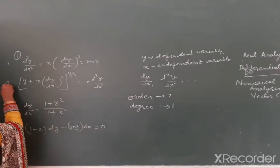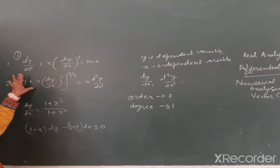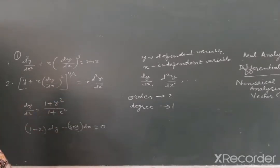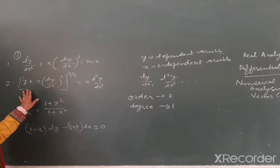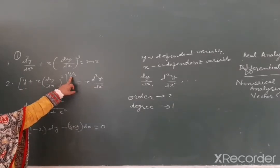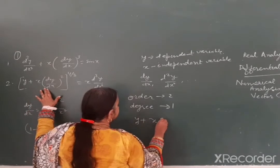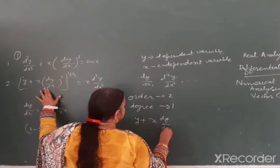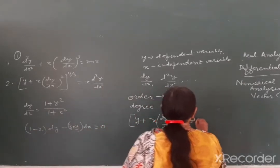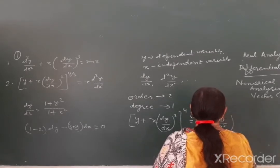Doosara example lete hain. Iske andar aapke paas hai: (y + x dy/dx)^(4/3) is equal to x d²y/dx². Yahan par 4/3 hai, toh yahan par whole number hona chahiye koi bhi. Toh hum kya karenge - donon taraf isko cube kar denge. Jab cube karenge toh ye ho jaayega: (y + x dy/dx)^4 is equal to x³ (d²y/dx²)^3.